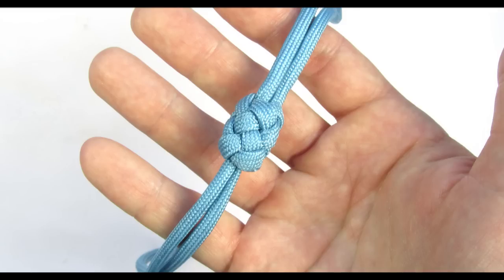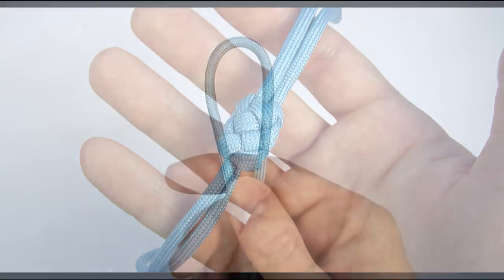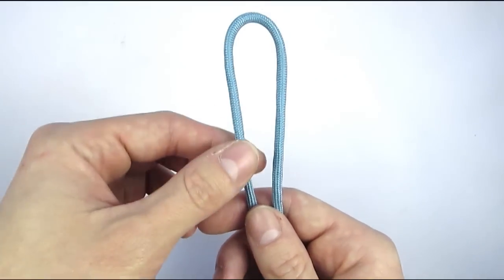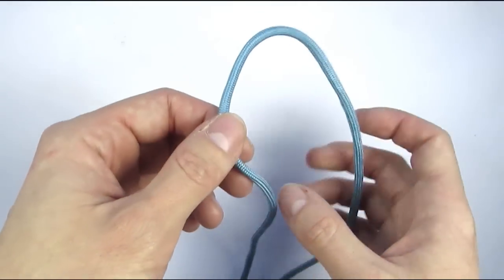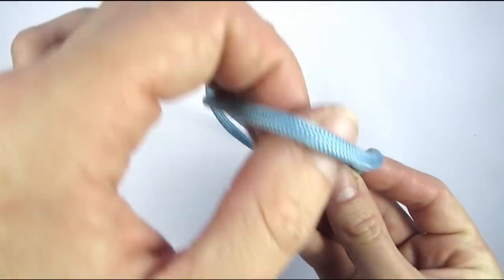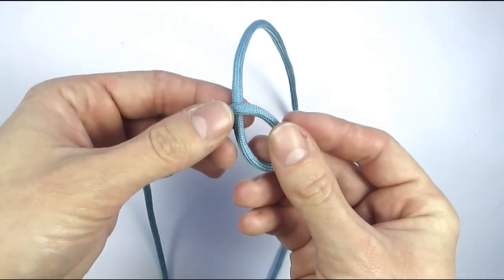So to start off, I have folded my cord in half and I'm going to make two loops with my left cord. So the first one I make over like this.